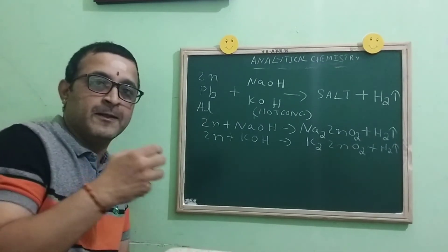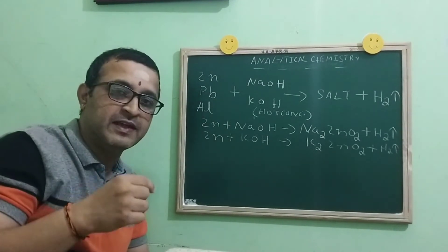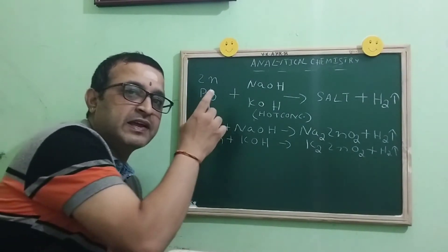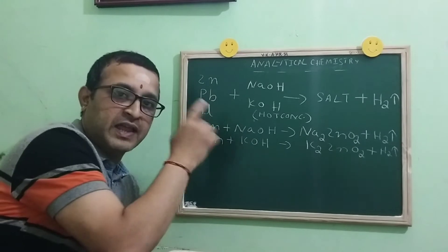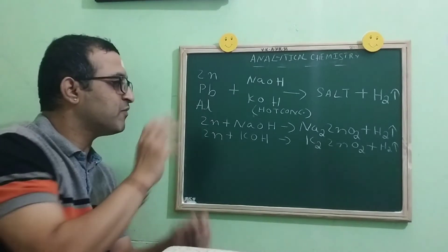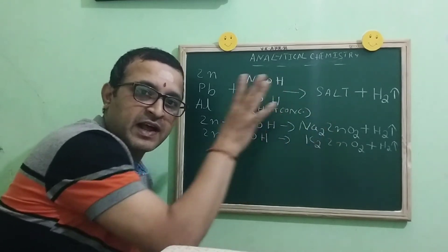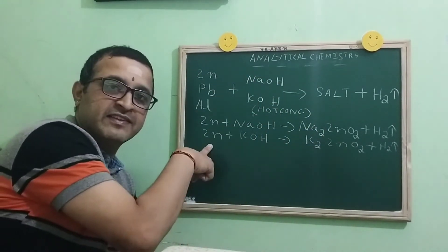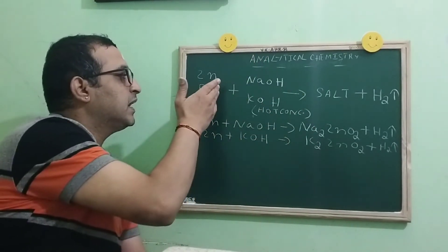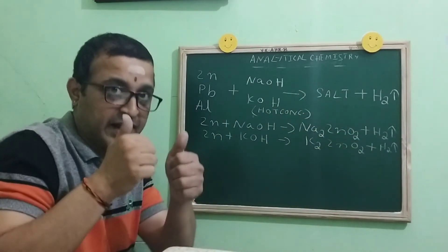Let us move to the next thing. Children, zinc, lead and aluminum are metals which are present above hydrogen in the activity series. When they are treated with hot concentrated alkalis like NaOH or KOH, you will get a salt and hydrogen which burns with air and pops. For example, zinc with sodium hydroxide produces sodium zincate and hydrogen, and zinc with KOH produces potassium zincate and hydrogen. Similarly, lead and aluminum also produce corresponding salts and hydrogen gas.